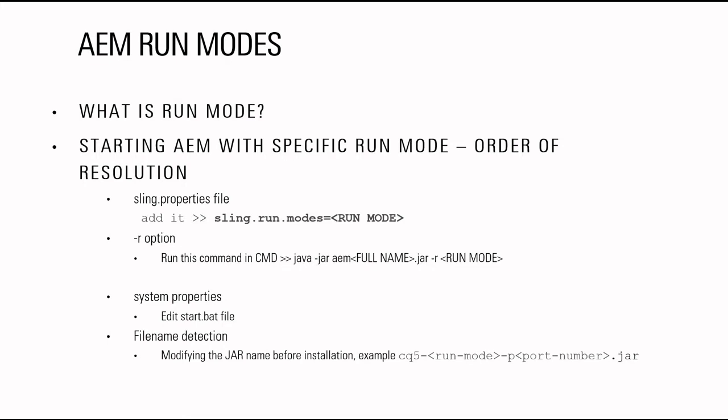In this video I'm going to talk about AEM run modes. A run mode is basically which AEM instance is running — for example, whether it's an author instance, a publish instance, or maybe a production author instance or staging author instance. Inside my AEM application I can define configuration inside run modes as dynamic properties. For example, we have written one OSGi service where we have a dynamic property — maybe I want to get a web service API, and it's a different API on dev environment versus staging and production. With AEM run modes I can achieve dynamic behavior with the same code.